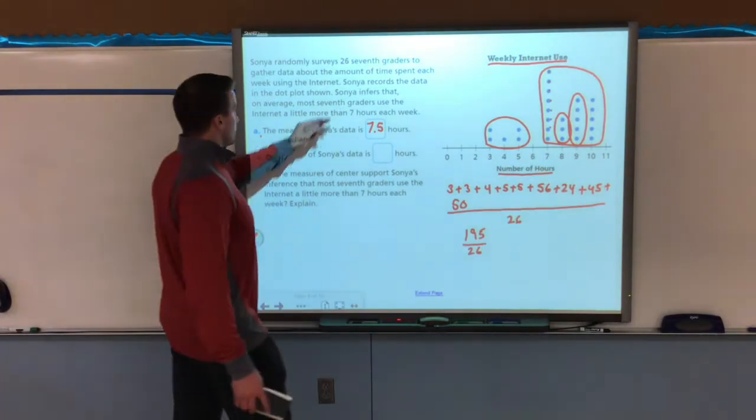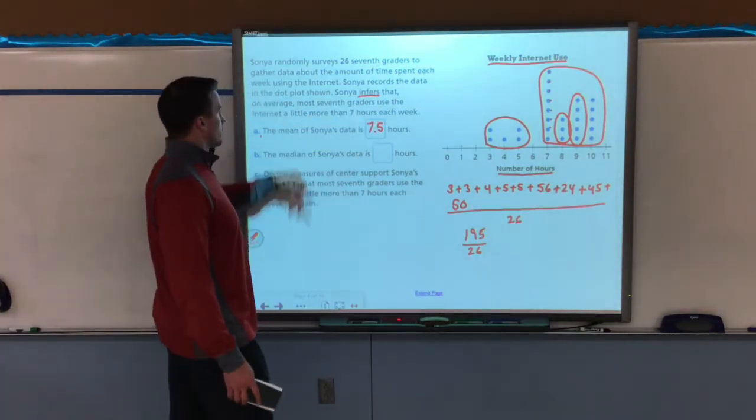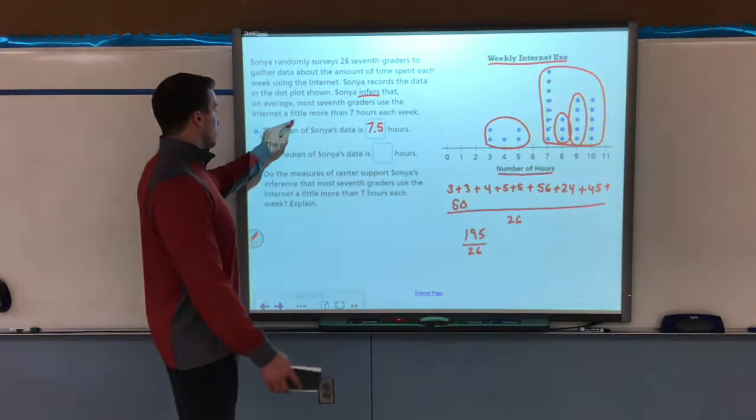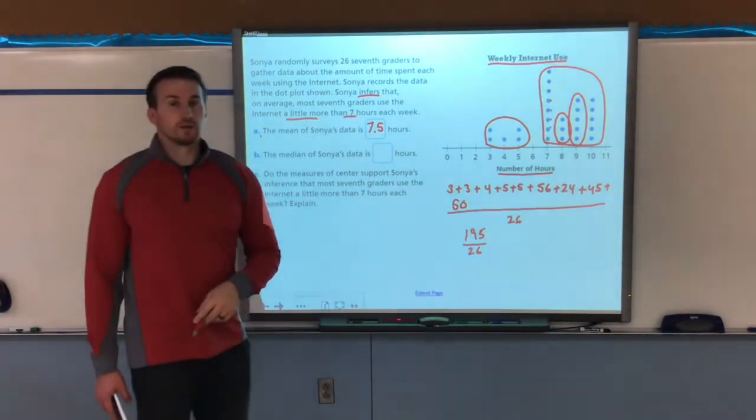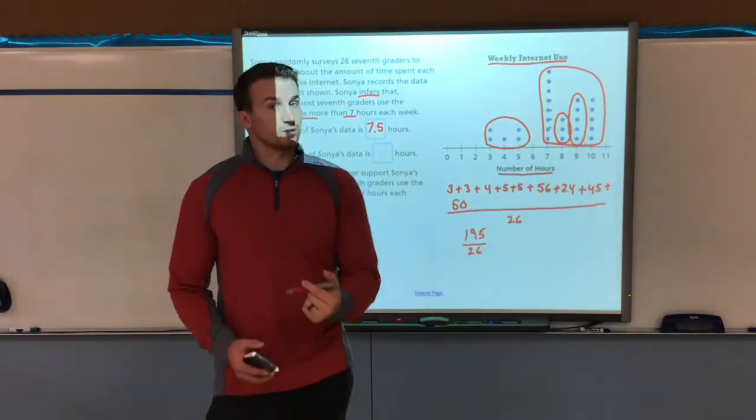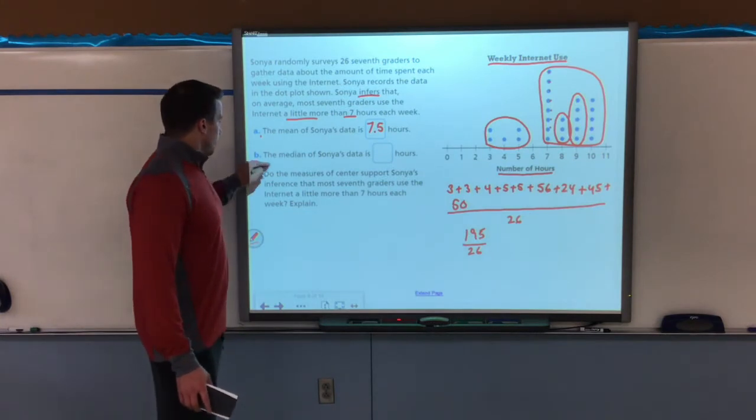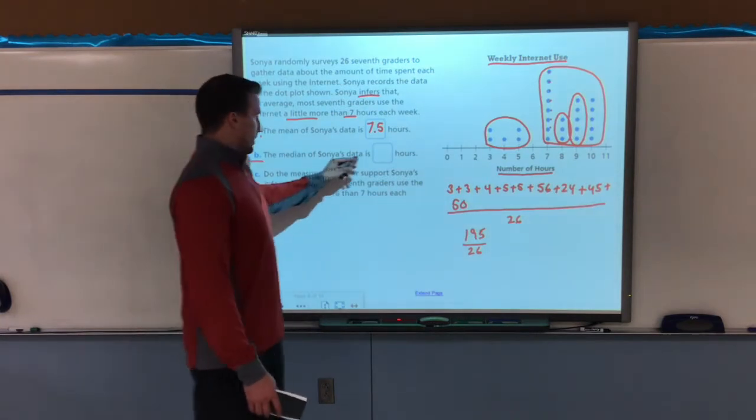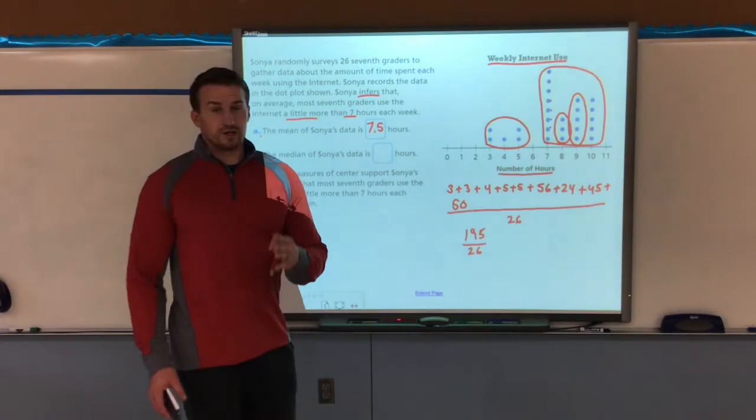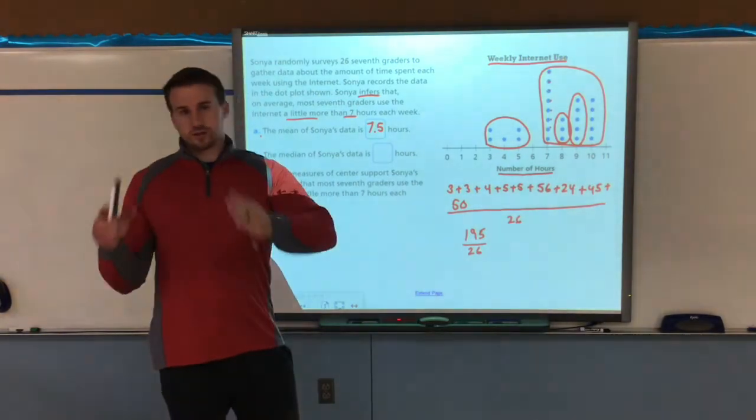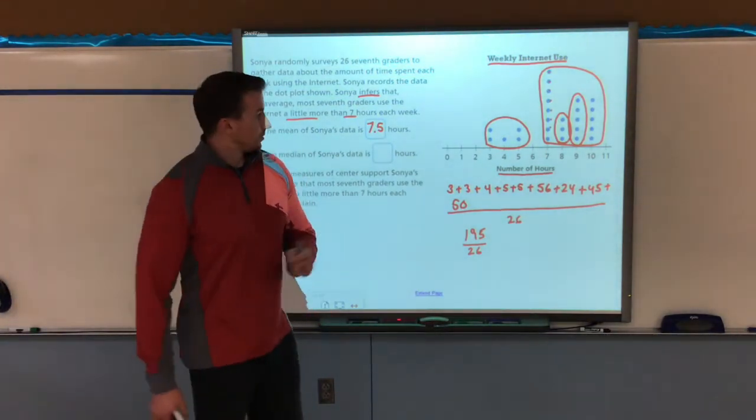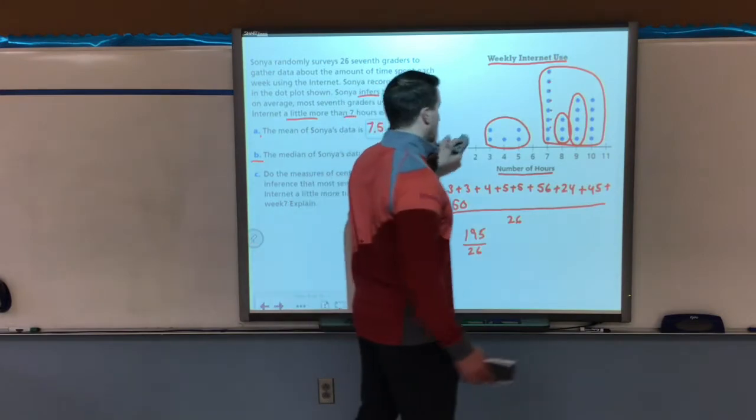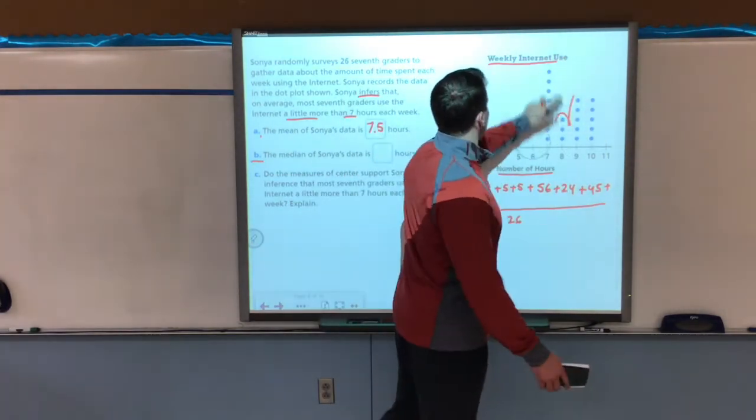Alright? So was Sonia's inference on average correct? Yeah, because it says a little more than seven hours. Well, seven and a half is just a little more than seven. Question B says the median of Sonia's data is blank hours. Now for the median, you don't have to write the numbers down and then cross off. It's really simple to do with the dots, which is what I'm going to show you right now on the video.